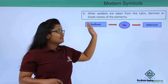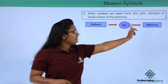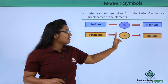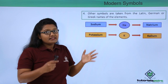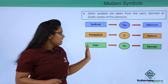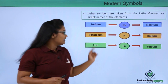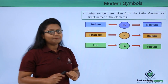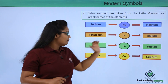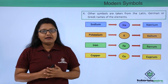The symbols of another set of elements are taken from their Latin, German, or Greek names. For example, sodium is symbolized as Na, taken from its Latin name Natrium. Potassium is denoted by K, taken from its Latin name Kalium. Iron is denoted as Fe, from its Latin name Ferrum. And copper's symbol is Cu, taken from the Latin name Cuprum.